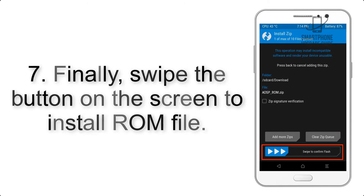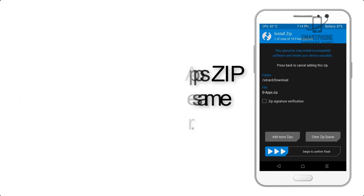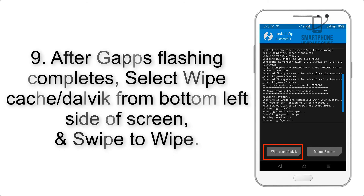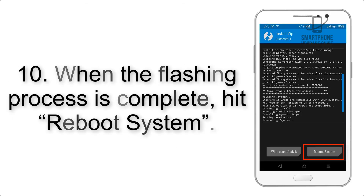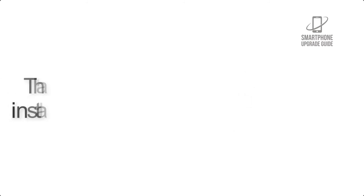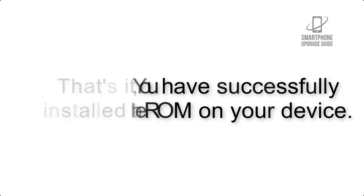Step 7: Swipe the button on the screen to install the ROM file. Step 8: Flash the GApps zip package in the same manner. Step 9: After GApps flashing completes, select Wipe Cache and Dalvik from the bottom left side of the screen and swipe to wipe. Step 10: When the flashing process is complete, hit Reboot System. That's it — you have successfully installed the ROM on your device.